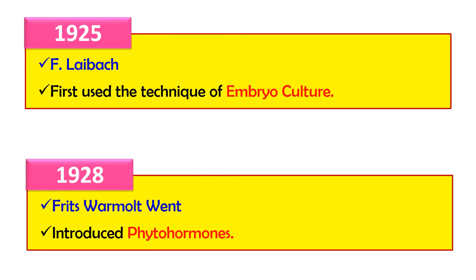In 1928, the term phytohormone was introduced by F.W. Wendt. As the name indicates, phyto means plant and hormones means hormones. So these are the hormones secreted by plants — chemicals which perform functions in the plant, such as acting as growth regulators.